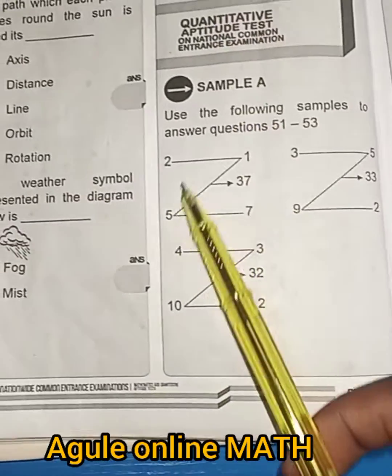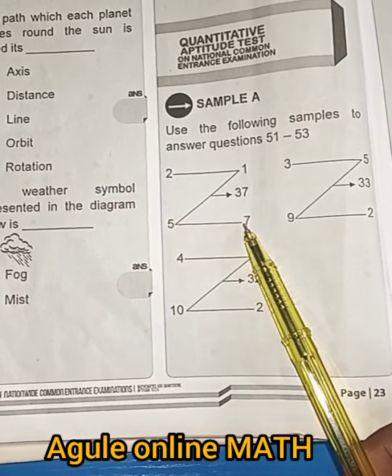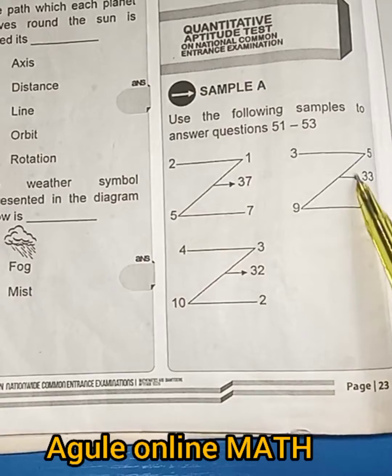We have two here. We have one. We have 37. We have 5 and we have 7. How are we going to solve this?